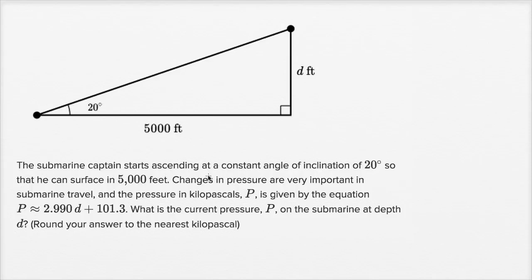The submarine captain starts ascending at a constant angle of inclination of 20 degrees so that he can surface in 5,000 feet. It looks like this is the submarine right here, and he starts surfacing, ascending at an angle of 20 degrees in that direction. This is our angle of 20 degrees, and he wants to surface, so this is the surface right over here of the water. He wants to surface after traveling 5,000 feet in the horizontal direction.